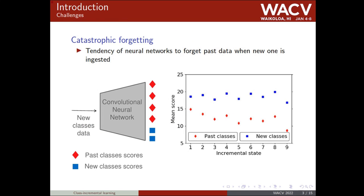The main challenge of continual learning algorithms is catastrophic forgetting, which is the tendency of neural networks to underfit past data when trying to learn new data. Practically, this means that updating the model using new data only at each time leads to a bias of the network towards new classes. In other words, the gap between classification scores of past and new classes is large, as we can see in the figure on the right.